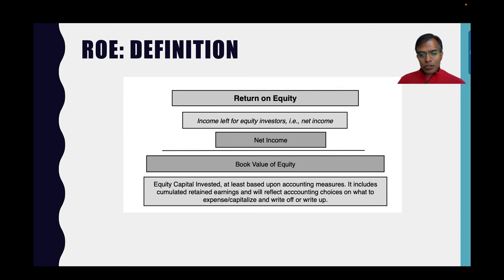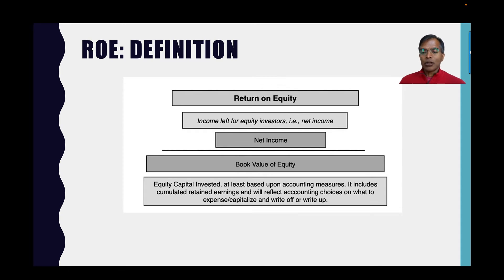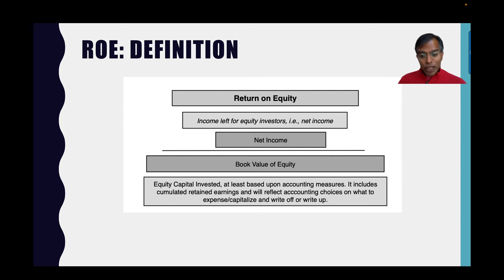Return on equity is an accounting measure. Net income is not cash flow, but an accounting return is based on accounting earnings, so we look at net income. I scale that net income to the accountant's measure of equity — this is an accounting measure, so we stay with the accounting measure of equity. I divide by the book value of equity, which is what you see on the balance sheet: it includes retained earnings and essentially the entire history of the company. That book value of equity can be negative for some companies, and for those you cannot compute return on equity, but for most companies there will be a book value of equity reflecting their collective successes and failures over their history. Net income divided by book value of equity is return on equity.